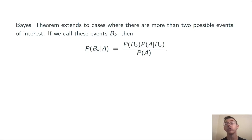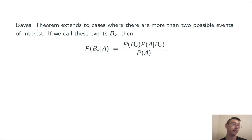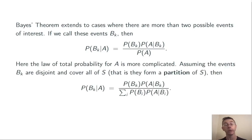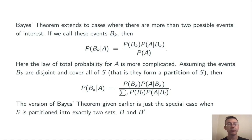Bayes' theorem extends to cases where there are more than two possible events of interest. If we call those events B sub k, we can write Bayes' theorem like this: the probability of B sub k given A is equal to the probability of B sub k times the probability of A given B sub k, divided by the probability of A. This formulation becomes a little more distinct when we use the law of total probability to rewrite the denominator using all of the different B sub k's, assuming that all of the events B sub k are disjoint and cover the entire sample space S — that is, they form a partition of that sample space. The earlier version of Bayes' theorem is just a special case of this one where the sample space S is partitioned into exactly two sets, B and B prime.